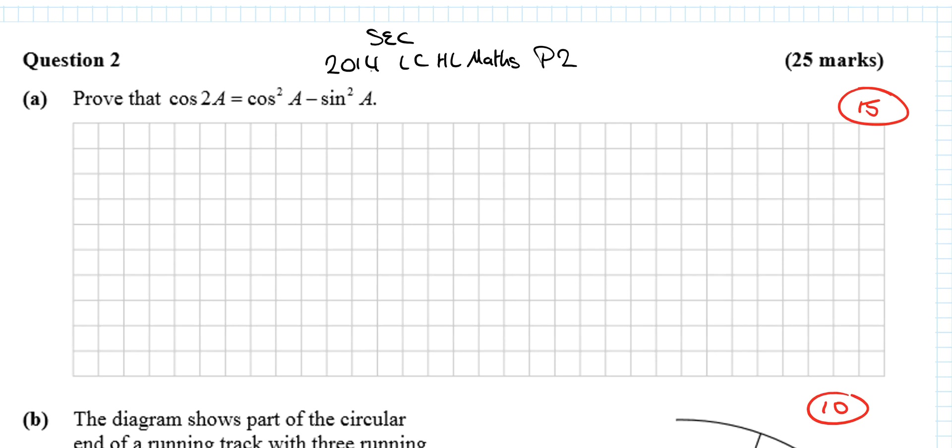In this video we'll be looking at SEC 2014 Leaving Certificate Higher Level Maths Paper 2, Question 2. It begins with an identity. Prove that cos 2A equals cos squared A minus sin squared A for 15 marks.